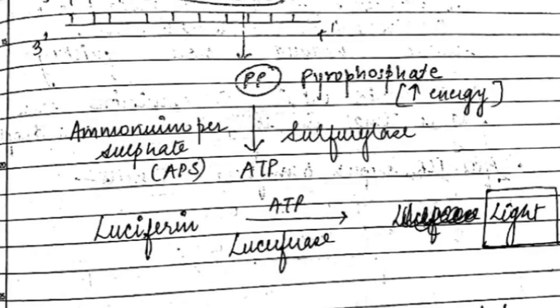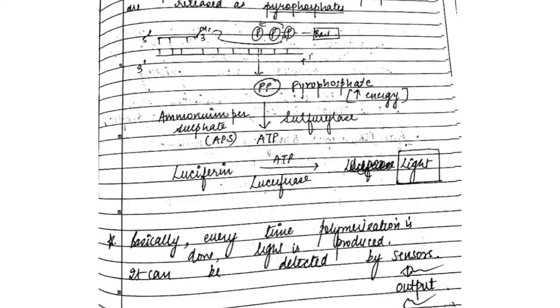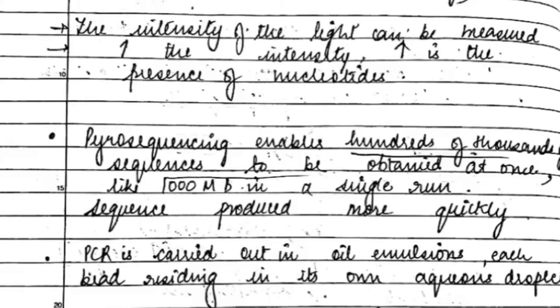It is not necessary that after every polymerization event there will be light; sometimes we have to use sensors that help in detecting the light. For bachelors, you do not have to go into too much depth — just write an overview of what pyrosequencing is. Pyrosequencing also enables hundreds and thousands of sequences to be obtained at once.